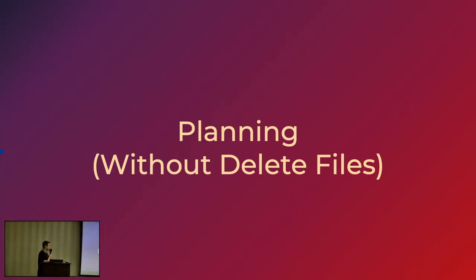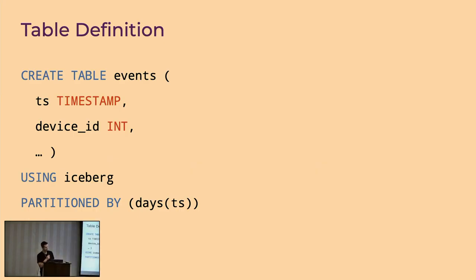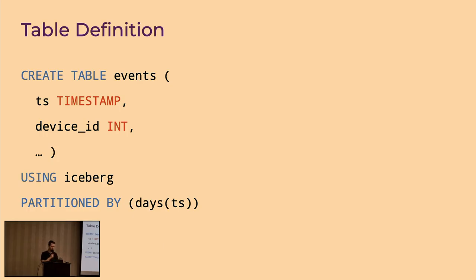Let's talk about planning. We'll first focus on use cases without delete files and cover merge-on-read later. Let's assume there is a table that persists events, and each event is associated with a timestamp and the ID of the device that created it. The table is also partitioned by the days transform on top of the timestamp column — this is what we call hidden partitioning in Iceberg, where instead of using raw columns you use partition transforms.